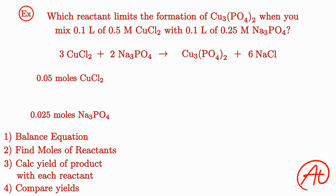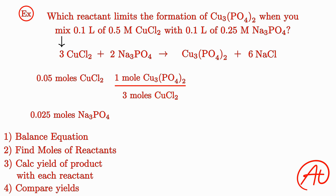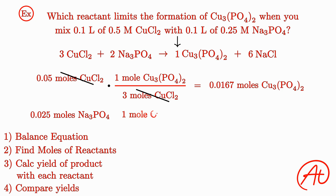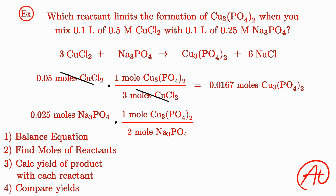Now that we have our moles of reactants, we can find the theoretical yield of the products — in particular, the copper phosphate. Dealing with CuCl2 first, from our balanced equation, in order to make one mole of copper phosphate we need three moles of CuCl2. This means we could theoretically make 0.0167 moles of copper phosphate. For sodium phosphate, from our balanced equation, to make one mole of copper phosphate we need two moles of sodium phosphate. If we have 0.025 moles of sodium phosphate, we could theoretically make 0.0125 moles of copper phosphate.